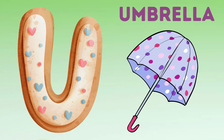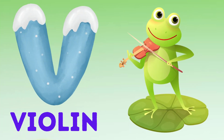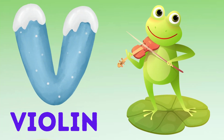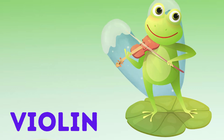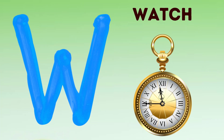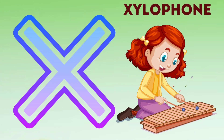U is for umbrella, u-u-umbrella. V is for violin, v-v-violin. W is for watch, w-w-watch. X is for xylophone, x-x-xylophone.